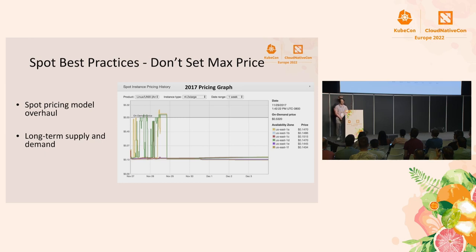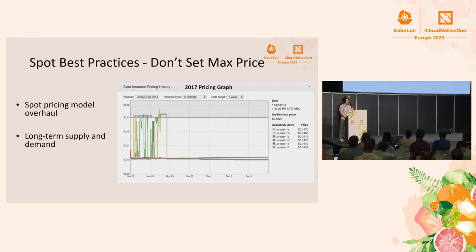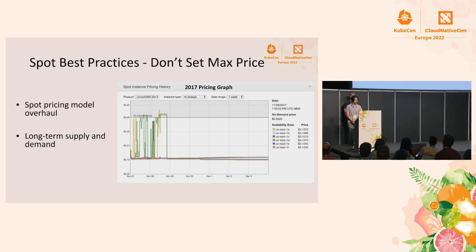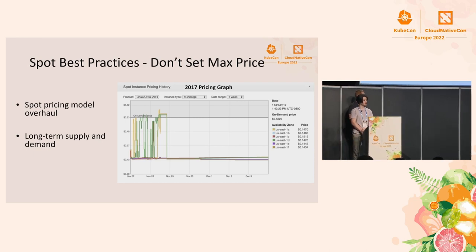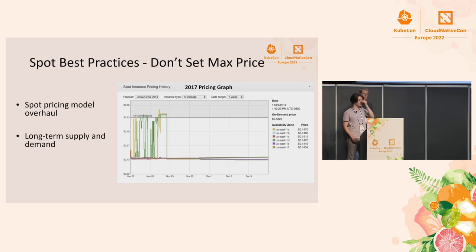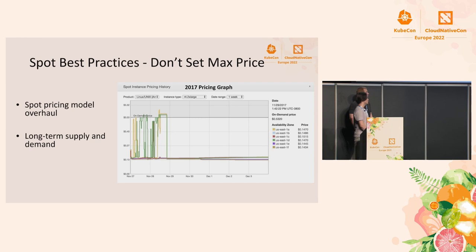Prior to 2017, the Spot pricing model was a bidding system. When you set your max price, this is what you would pay for the instance, and it would maximize runtime based on how high you set it. Sometimes with this bidding system the price would go over the on-demand price. After 2017, EC2 changed this to be based on long-term supply and demand, and max price is just what you're willing to pay. If you don't set max price, it defaults to the on-demand price. Having a max price set opens up another condition from which EC2 can reclaim the instance, so most of the time you want to just not set max price to maximize your instance runtime.